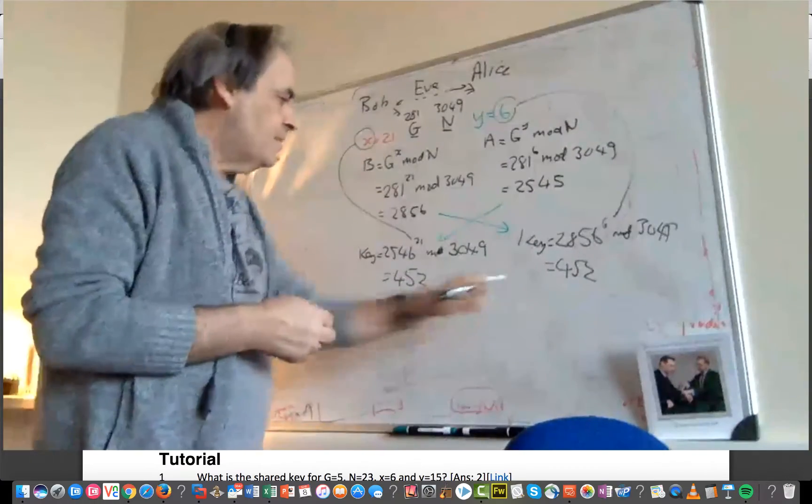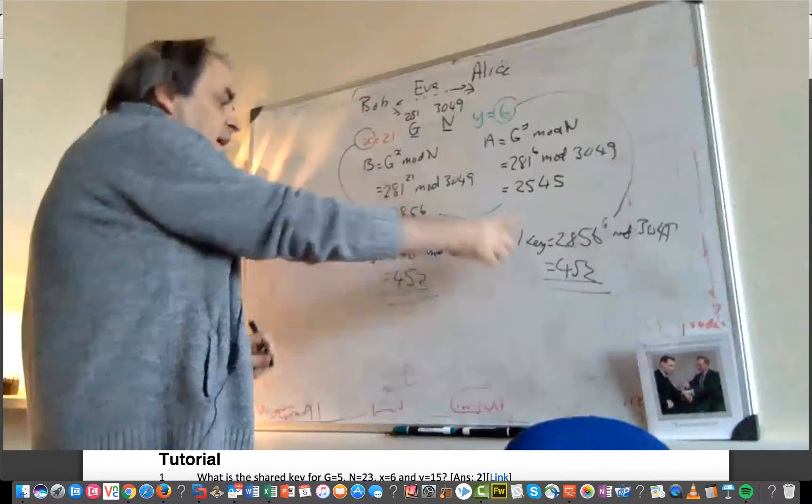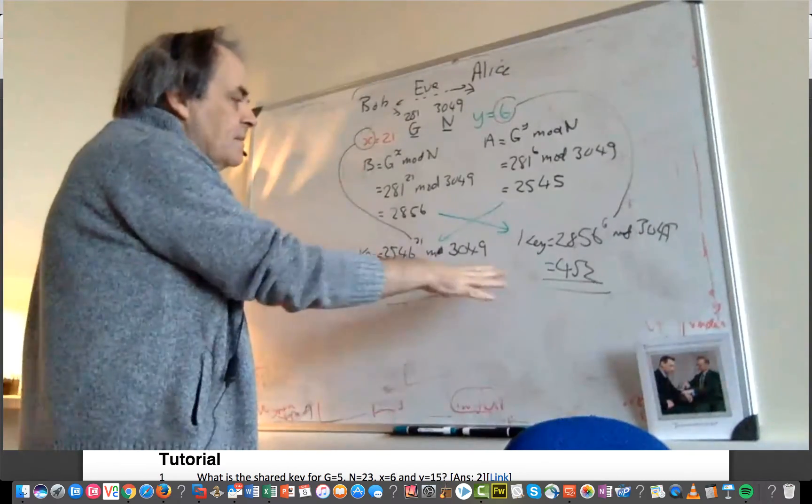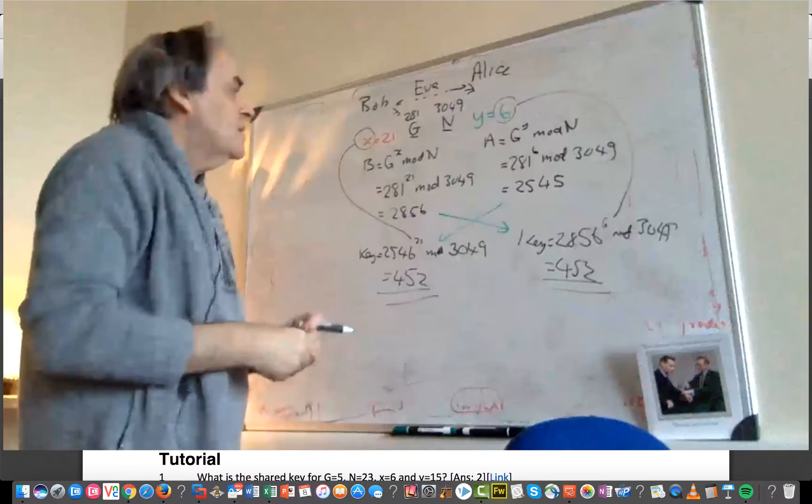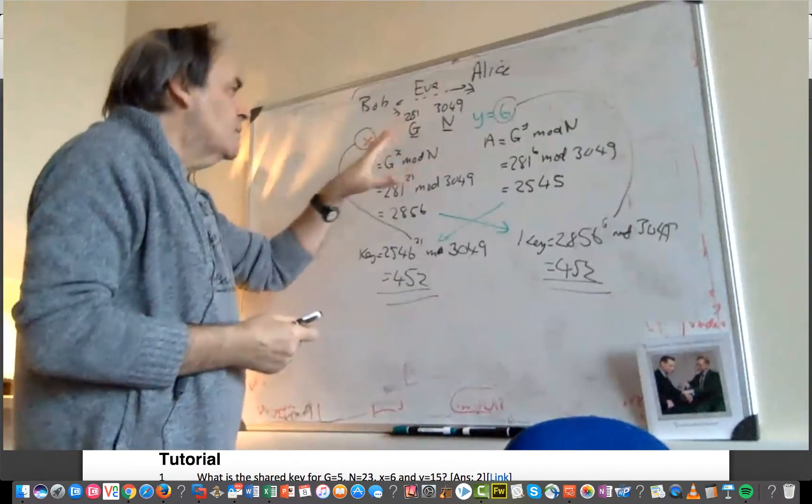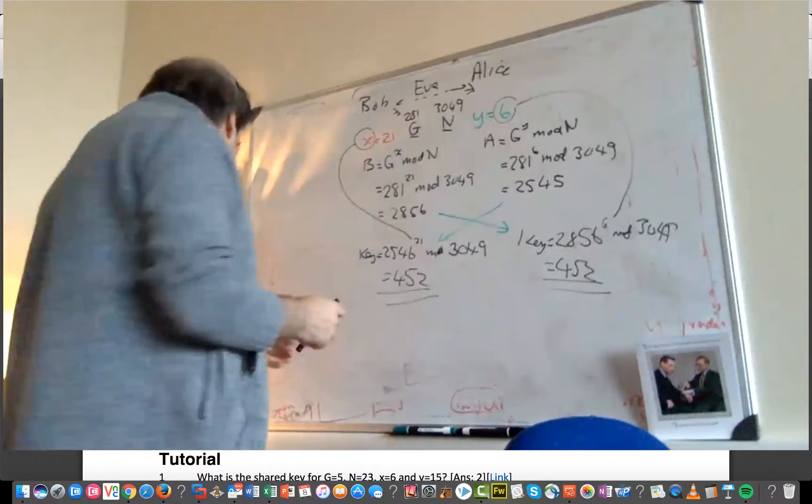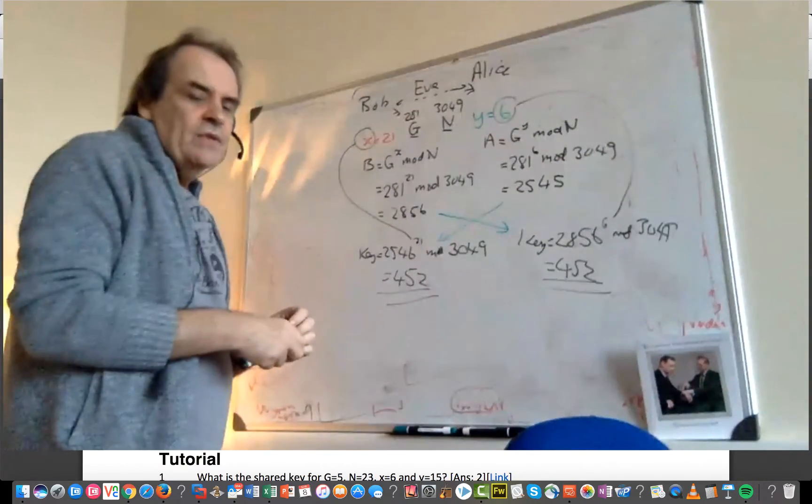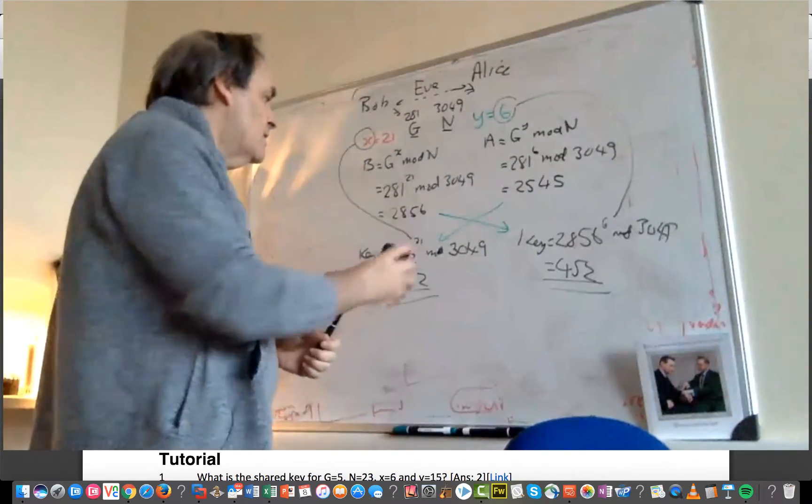So in this way, Bob and Alice will end up with the same value. And even though Eve has been listening, then it's not possible for her to work out what the values of X and Y are. Obviously, she could do it by brute force, so the numbers we use in real life are much larger than these values.